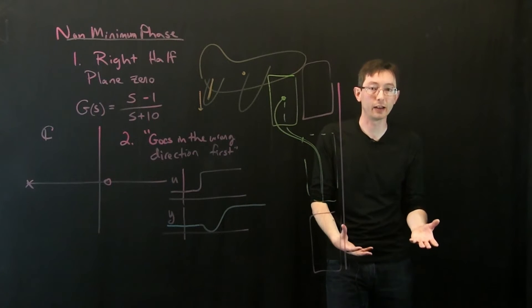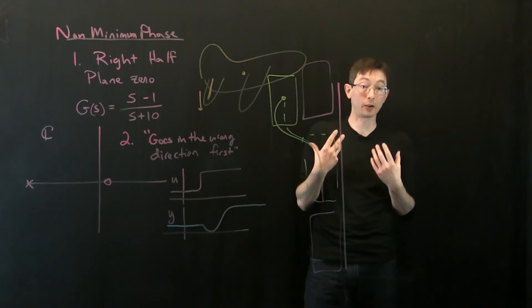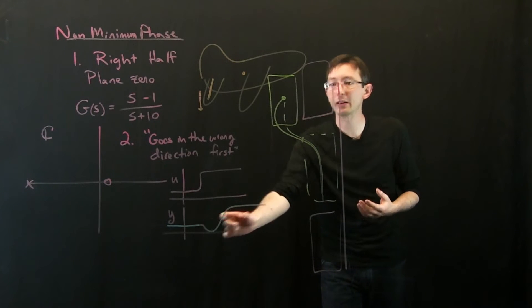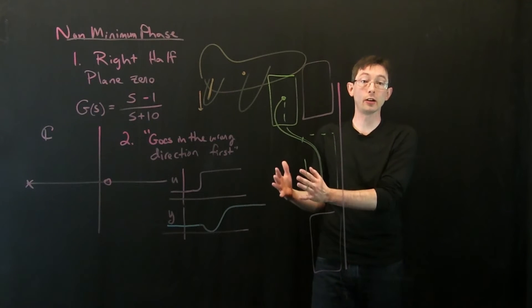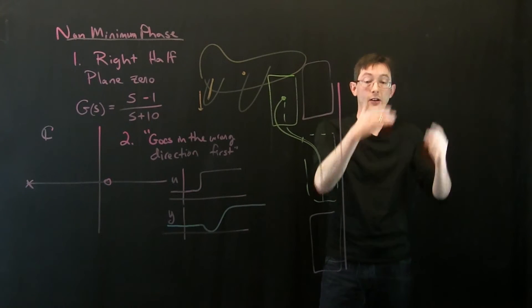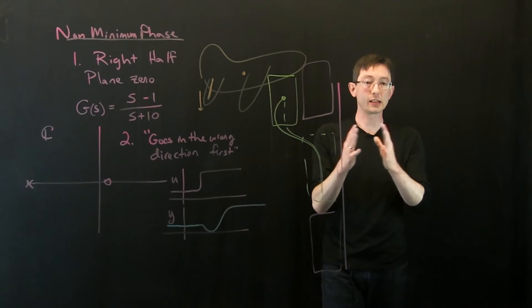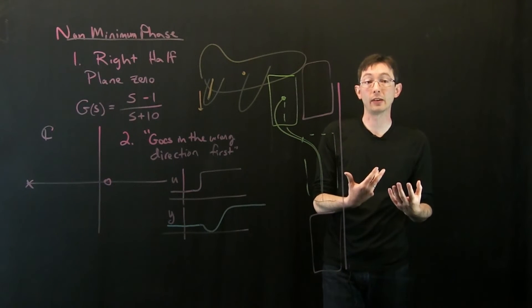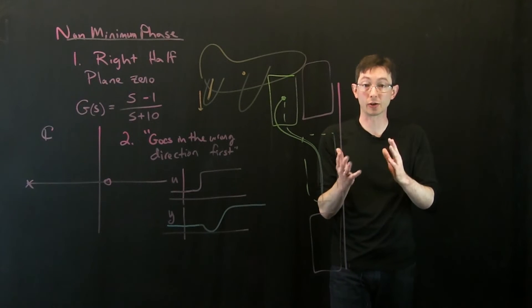It's not mathematically exactly like a time delay, but it has a lot of the same characteristics. There is some amount of time I have to be going in the wrong direction before I can actually go the direction I want, and that just like time delays give me fundamental limitations on my bandwidth, how fast of a change I can track.